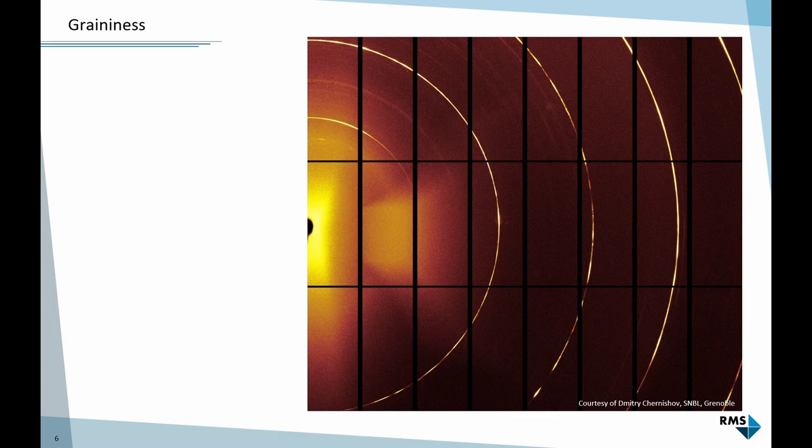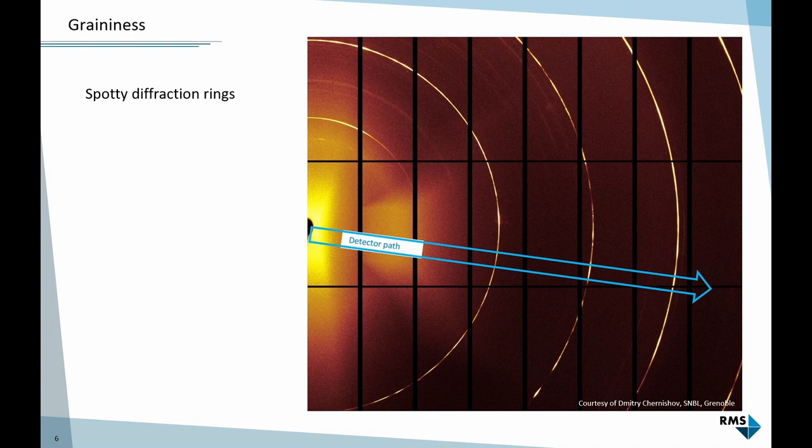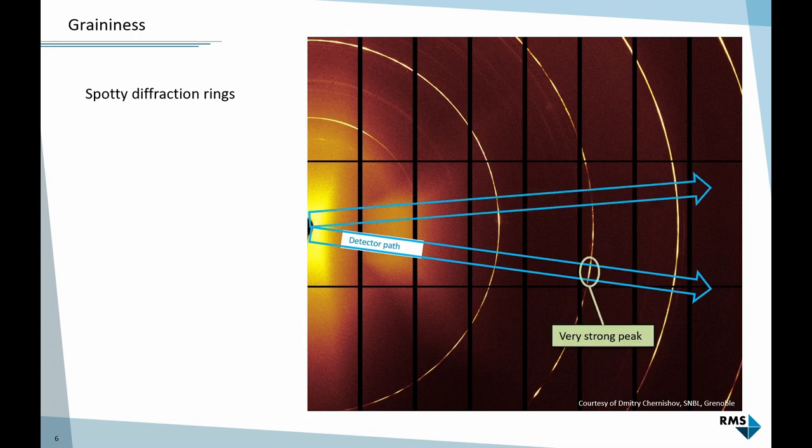On this example from a synchrotron dataset, we can see examples of spotted diffraction rings. This one over here is not smooth at all, this one is much smoother, but this one is spotty. Now imagine our detector scans this path - over here it will register fairly high intensity. But if it scans this path at the same diffraction angle, it would detect hardly any intensity.